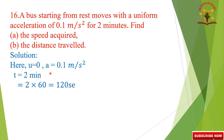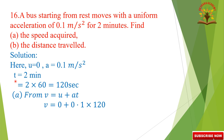The given acceleration A is equal to 0.1 meter per second square, and time is 2 minutes, converting into seconds: 2 into 60 equals 120 seconds. Now, speed V is equal to U plus AT. Substituting U, A, T values: V equals 0 plus 0.1 into 120, which gives V equals 12 meters per second.